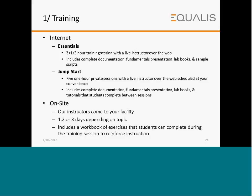Two kinds of training programs are available: virtual training via internet or on-site training. Virtual training consists of 3.5 training sessions with a live instructor over the web, including access to complete documentation, fundamentals presentation, lab books, and sample scripts. Alternatively, five one-hour private sessions with a live instructor can be scheduled at your convenience. On-site training ranges from one to three days at your facility, with a workbook of exercises students complete during the session to reinforce instruction.